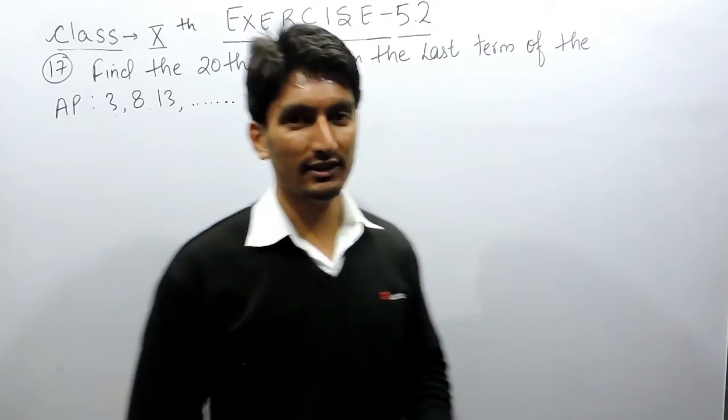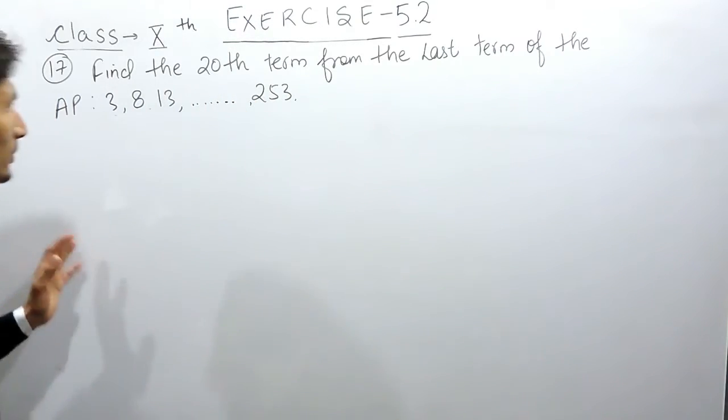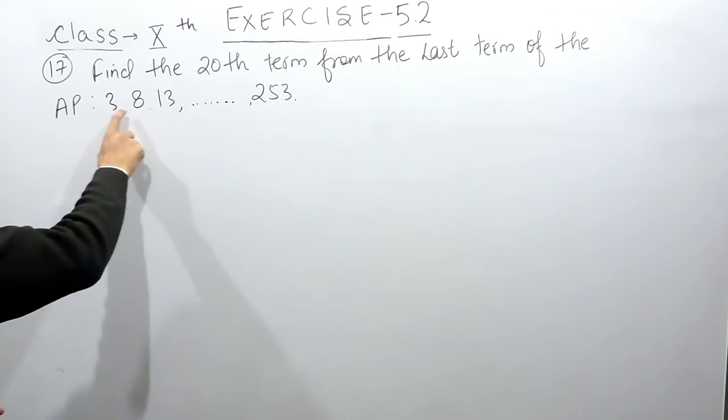Hello everyone, in this video we are going to solve question number 17 of exercise 5.2. The question says you have to find the 20th term from the last term of the AP which is 3, 8, 13, and so on till 253.